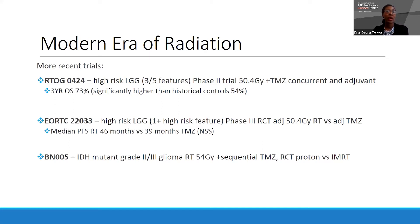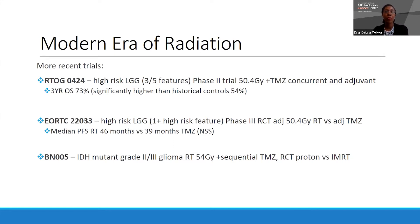For EORTC 22033, a high-risk study with at least one high-risk feature randomizing patients to radiation versus adjuvant temozolomide, the progression-free survival with radiation was improved, even though it was not statistically significant. BN005 is the current study open nationally in the United States for IDH mutant grade 2 and grade 3 gliomas, where patients receive 54 Gy with sequential temozolomide, with randomization to protons versus IMRT.